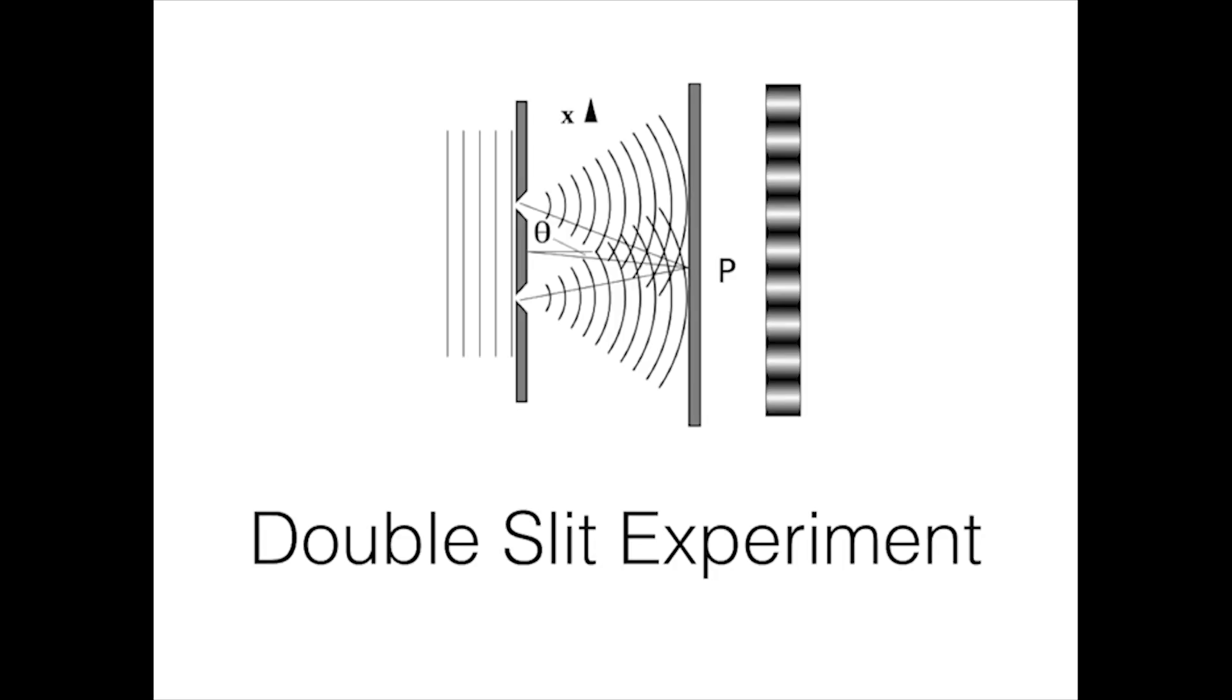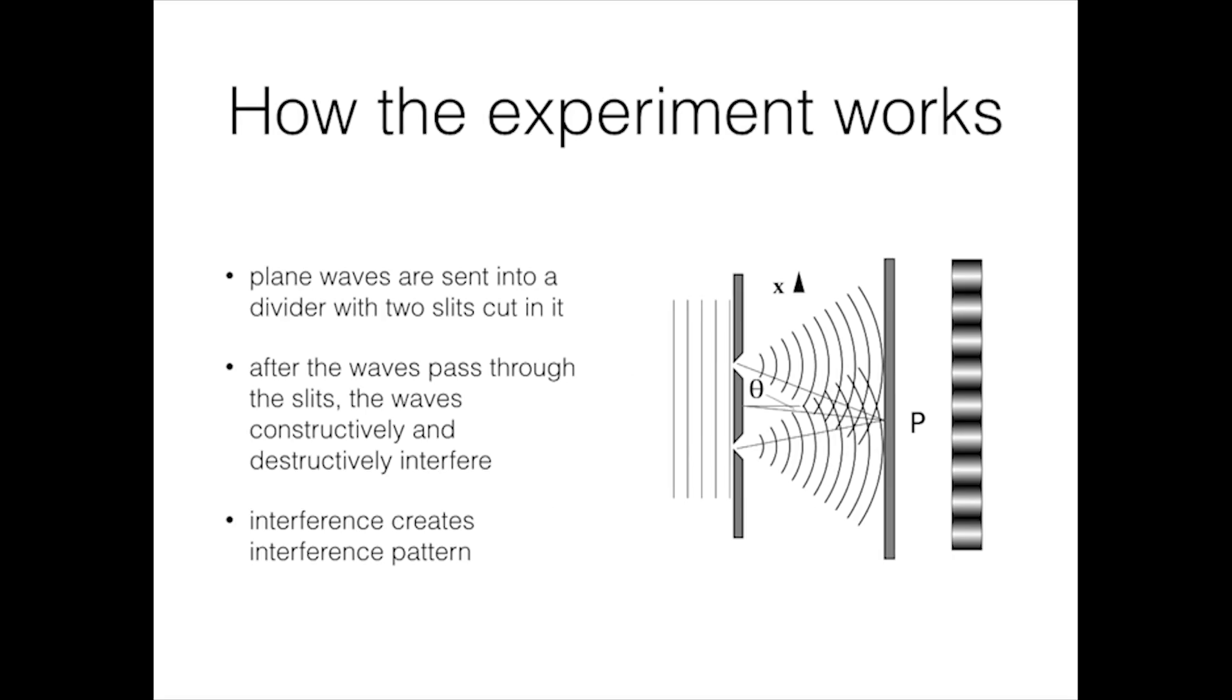This influential experiment is known today as the Double Slit Experiment. This experiment works by first sending plane waves into a divider with two slits cutting in it. After the waves pass through the slits, they constructively and destructively interfere. This interference causes the interference patterns seen on the right.